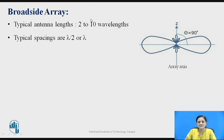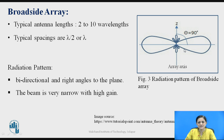How to consider the radiation pattern of a broadside array antenna? The typical antenna length is considered as 2 to 10 wavelengths, whereas the typical spacing between each element should be lambda or lambda by 2. Observing the radiation pattern figure, at both sides you get major lobes — the maximum lobe at one end and the minimum lobe at the other. These are called major lobes and these are the minor lobes. The minor lobes are along the array axis, whereas the major lobe radiation is perpendicular to the direction of the array axis.